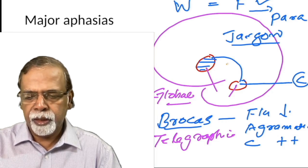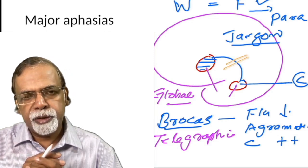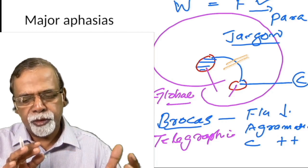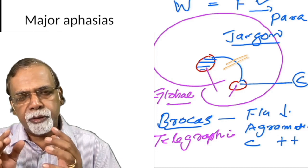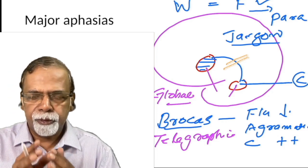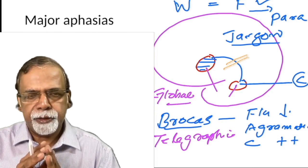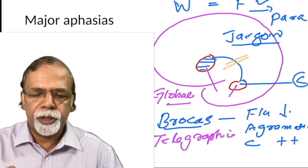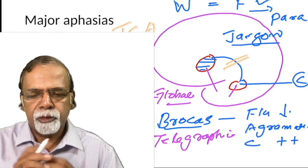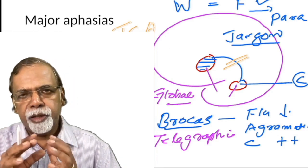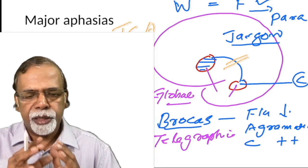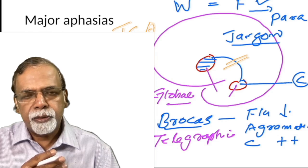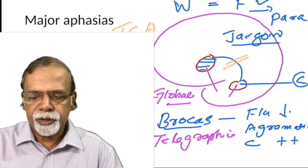In conduction aphasia, Broca's area is intact so speech is fluent, and Wernicke's area is intact so comprehension is good. The only problem is the patient cannot repeat things — repetition is impaired. These are the major aphasias. There is another group called the transcortical aphasias, which we will discuss later. The major aphasias occur in the perisylvian region, and when connections to these areas are lost, you get transcortical aphasia.